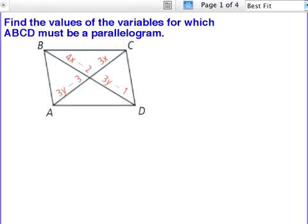We know that since this is a parallelogram, the diagonals bisect each other. So this length here has got to be the same as this length here, and this length, 4x minus 2, has got to equal 3y minus 1. So let's set up those equations.